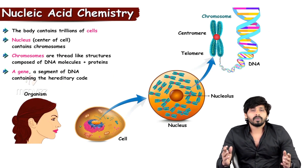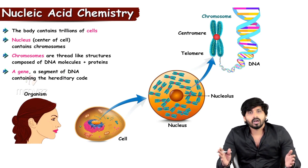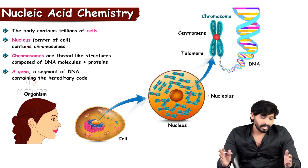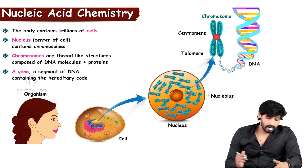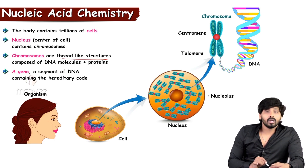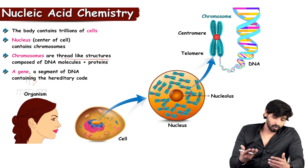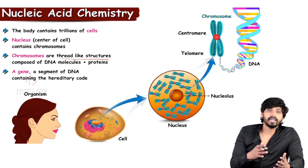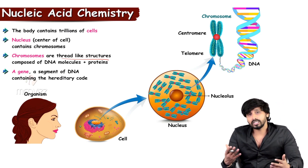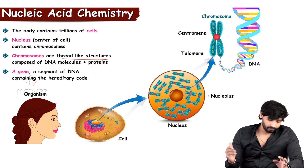Our body — each and every organ — is made up of cells, and cells contain many organelles. Among those cell organelles, the nucleus is one, and the nucleus contains chromosomes. Chromosomes are thread-like structures, and their composition means they are made up of DNA and proteins. The proteins are histones — histones are proteins tightly attached to the DNA.